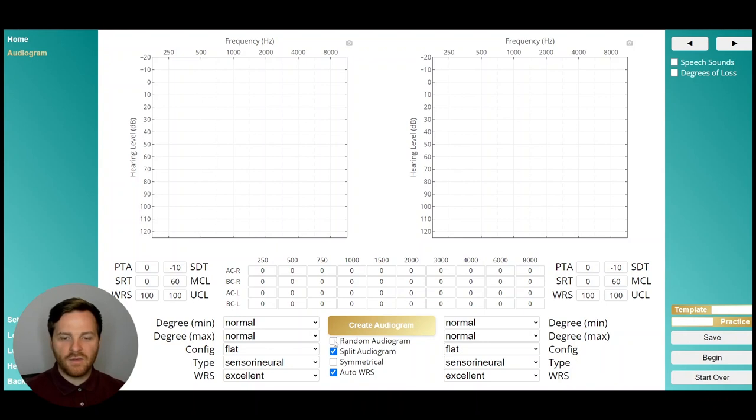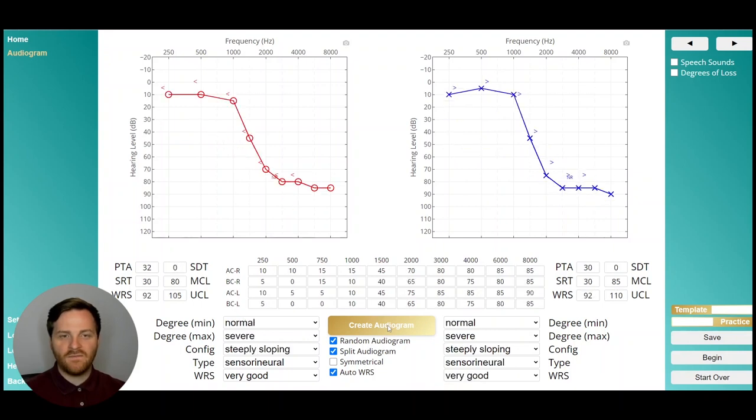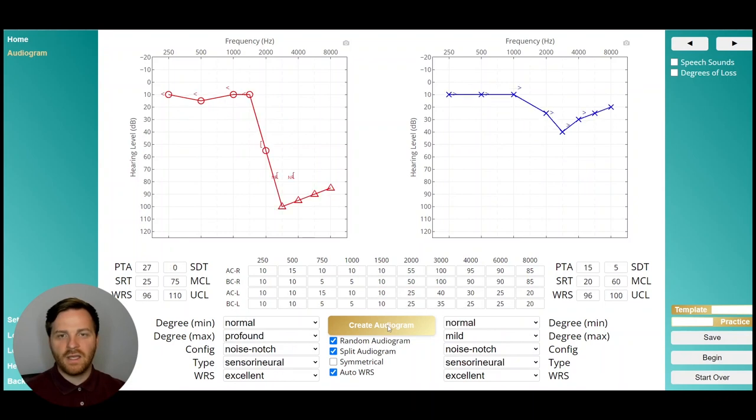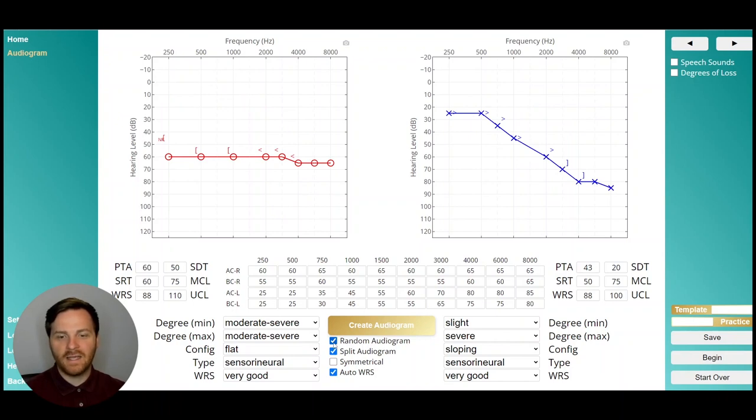Underneath create audiogram you have random audiogram. If you check random audiogram and click create, it will adjust the degree type and configuration to randomly create a new audiogram for you. If you wanted just a place to start, you can click through until you find an audiogram that looks interesting or tests a particular skill that you like.